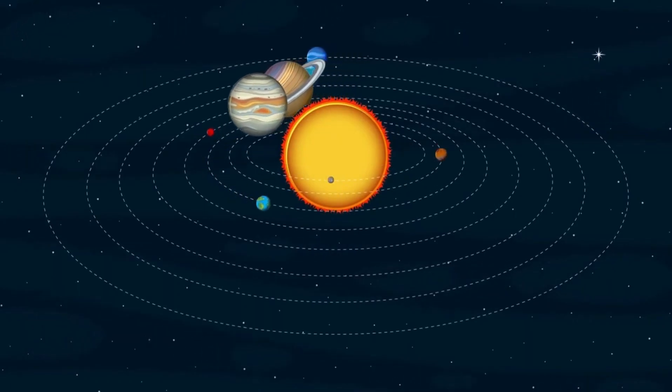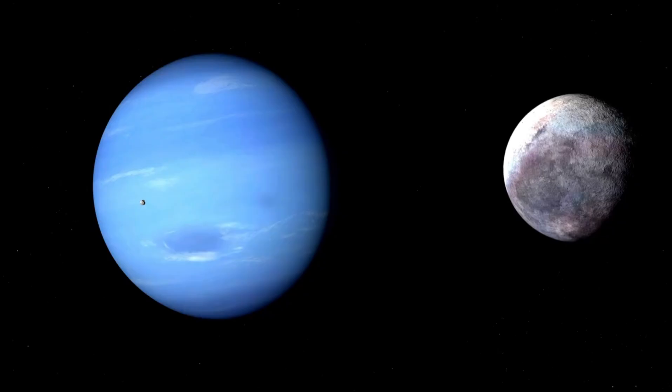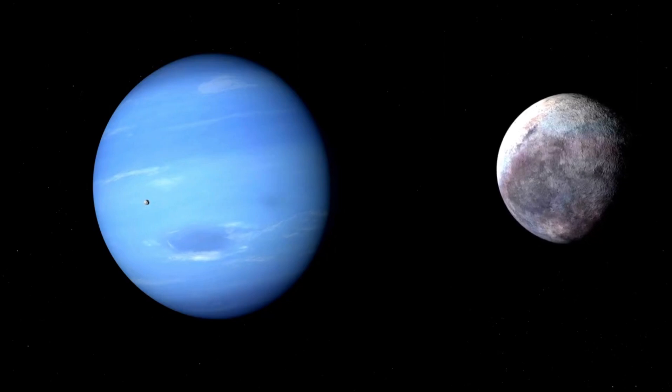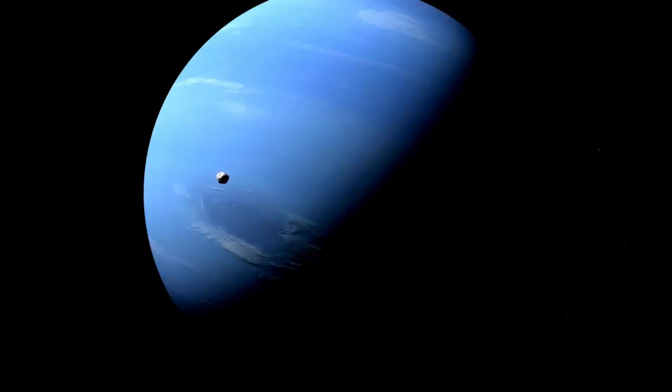Now let's get started with some fascinating facts about Neptune, the blue planet at the edge of our solar system. Neptune is the eighth known planet from the sun, and since Pluto was reclassified as a dwarf planet in 2006, it's now the last planet in our solar system.